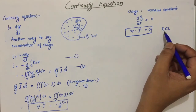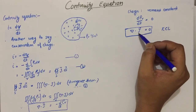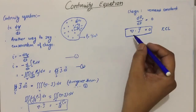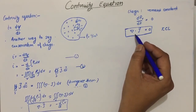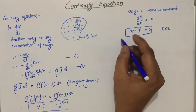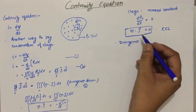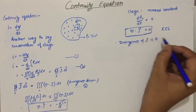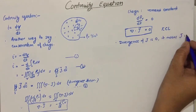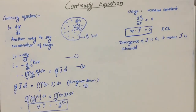This is what is applied in KCL. In a closed circuit the charge remains constant according to KCL, and the divergence of the current density will be equal to zero in that case. If divergence of J is zero, it means J is solenoidal, or we can say it is conservative.